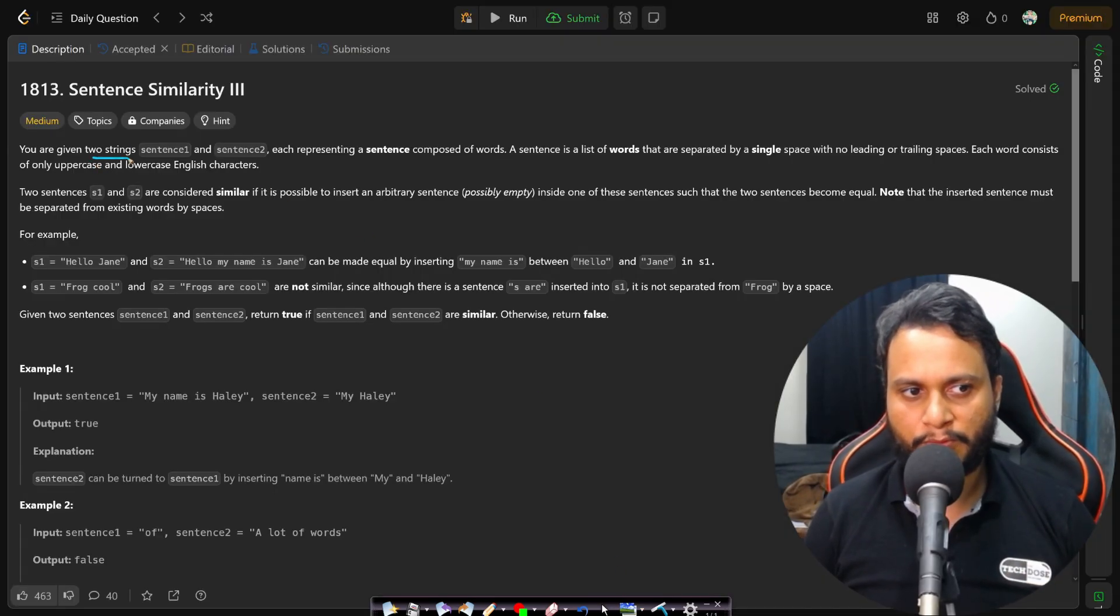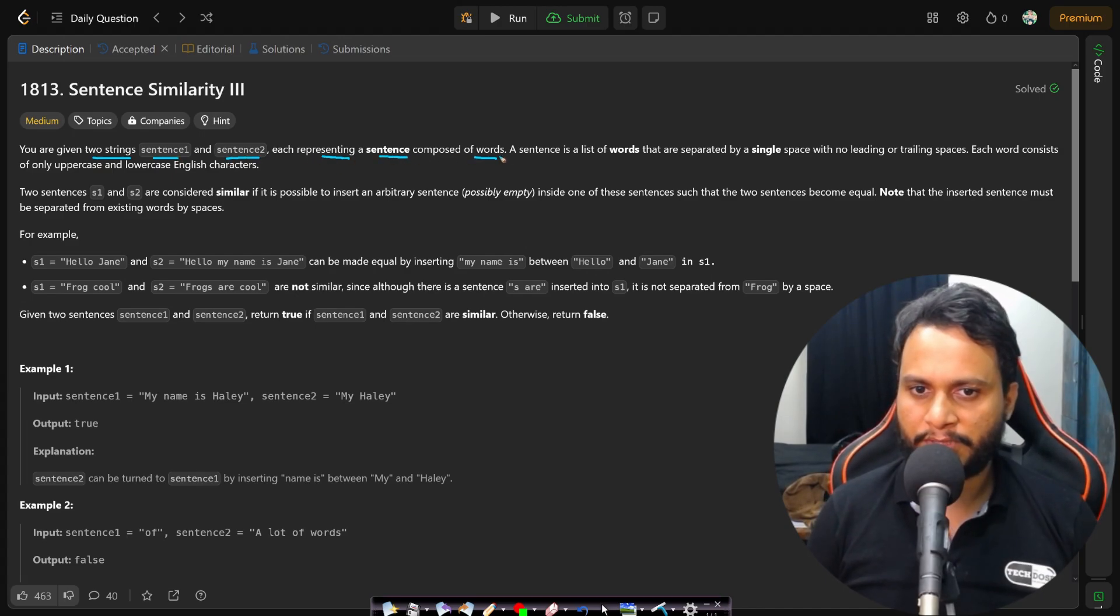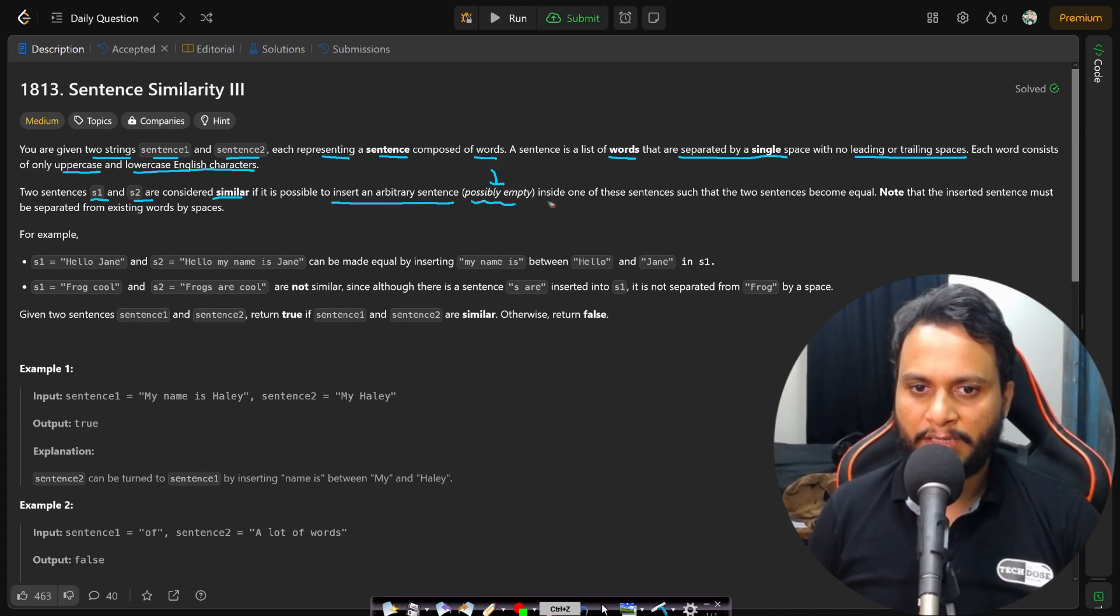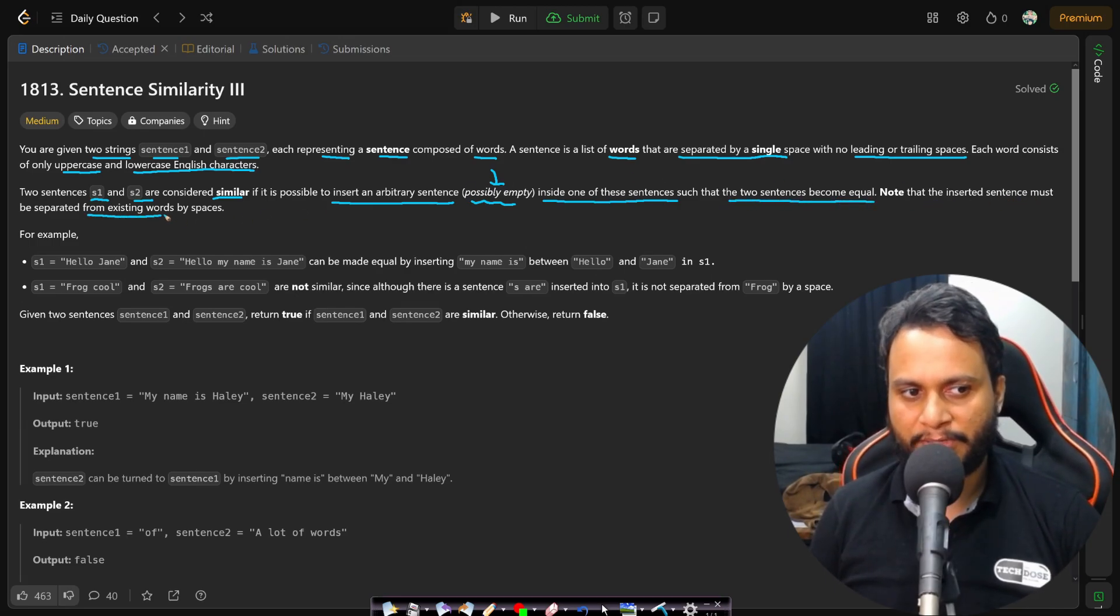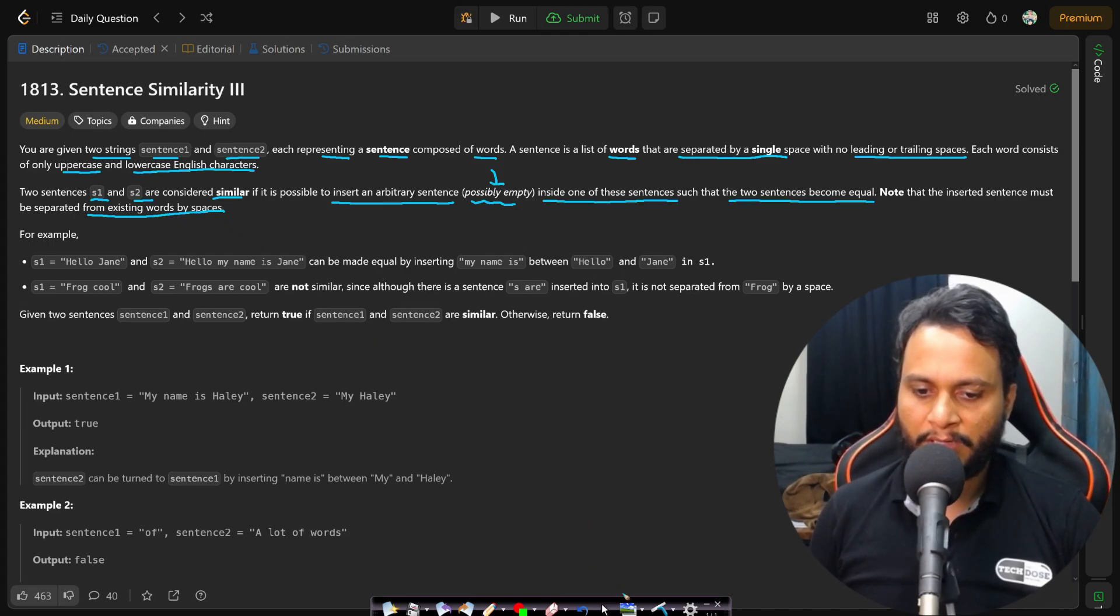In this problem you are given two strings, sentence1 and sentence2, each representing a sentence composed of words. A sentence is a list of words separated by a single space with no leading or trailing spaces. Each word consists of only uppercase and lowercase English letters. Two sentences S1 and S2 are considered similar if it is possible to insert an arbitrary sentence (that inserted sentence can be empty as well) inside one of these sentences such that the two sentences become equal. Note that the inserted sentence must be separated from the existing words by spaces.